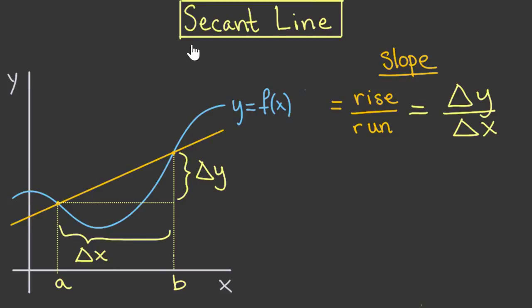Let's get back to thinking about the secant line. And what we want to do is identify the slope of this line in terms of our function f.